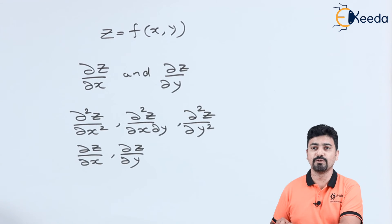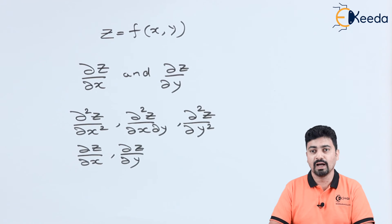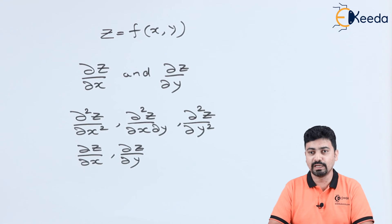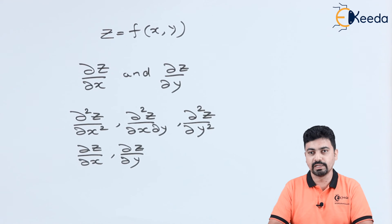These partial derivatives will be present in the second order partial differential equation. The higher order partial derivatives of z will not be included in a second order partial differential equation — only first order and second order partial derivatives are included.